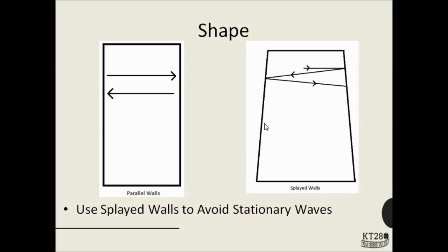In order to do that, we use splayed walls. So, we are just giving a certain angle to the walls so that it is reflected by a different angle, so it won't interfere with itself or superpose with itself to form a stationary wave.